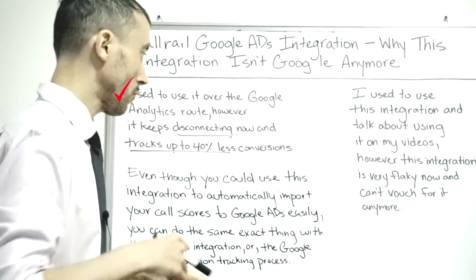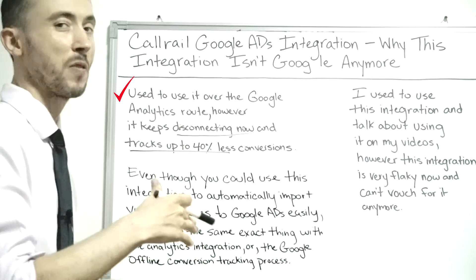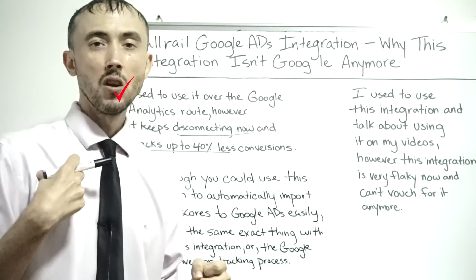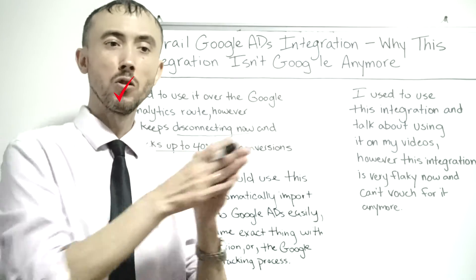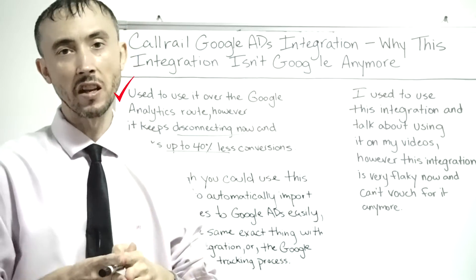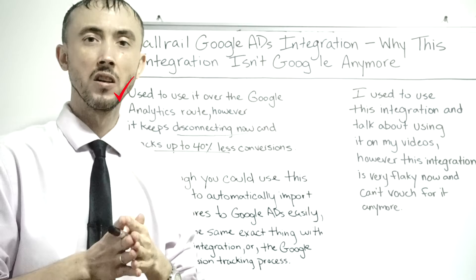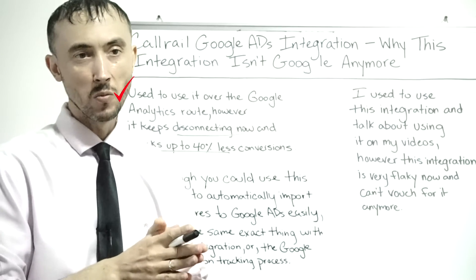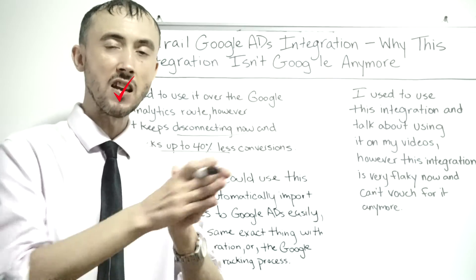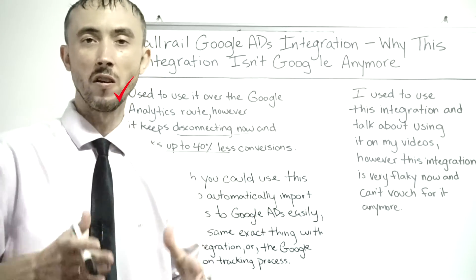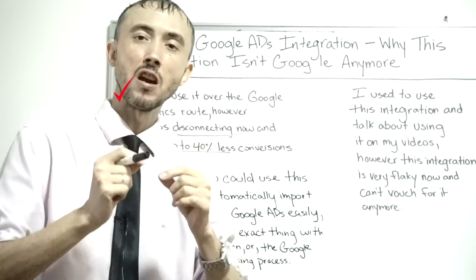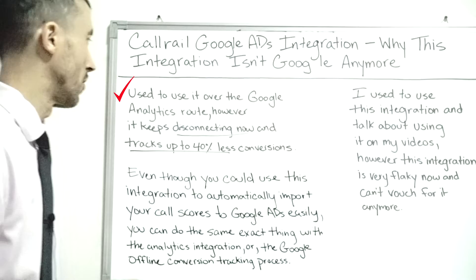The Google Ads to CallRail integration is flaky enough that you don't want to use it. I have personally never seen the integration between Google Ads and Google Analytics break. Furthermore, I've never seen the CallRail to Google Analytics integration break. So using that route to get call data into your Google Ads account is much more reliable and superior to using the direct CallRail to Google Ads integration.